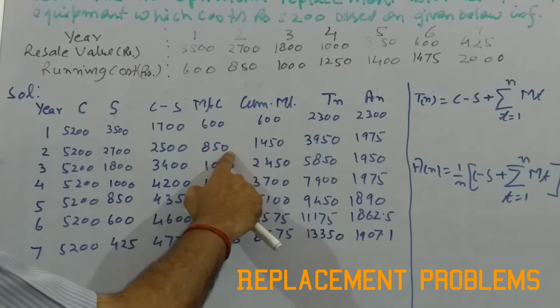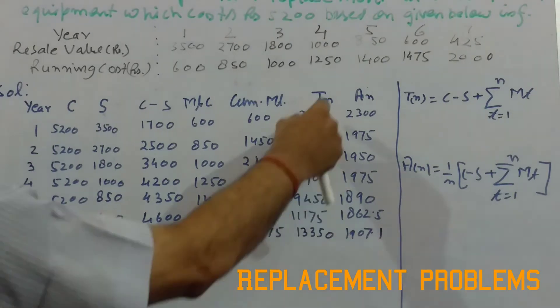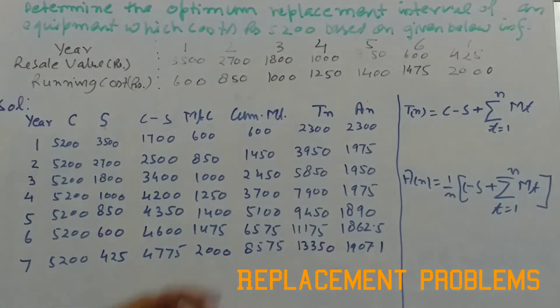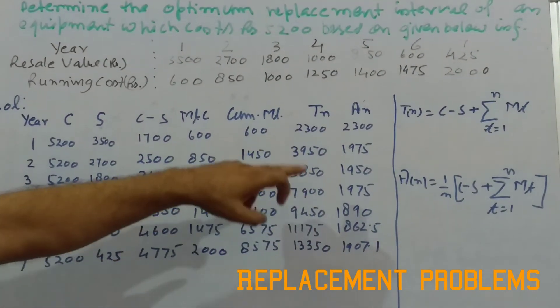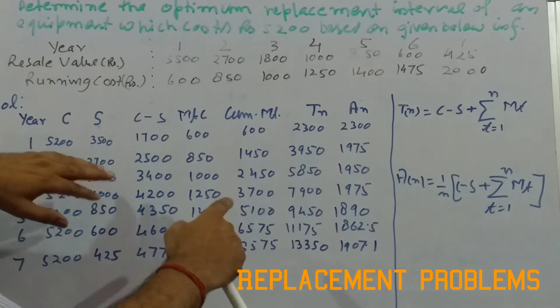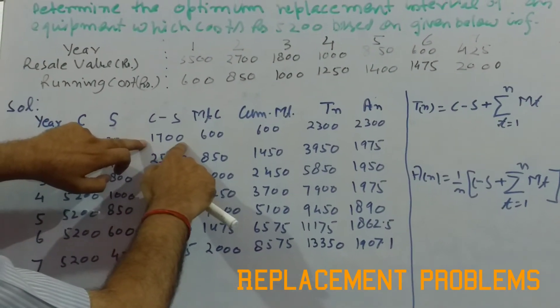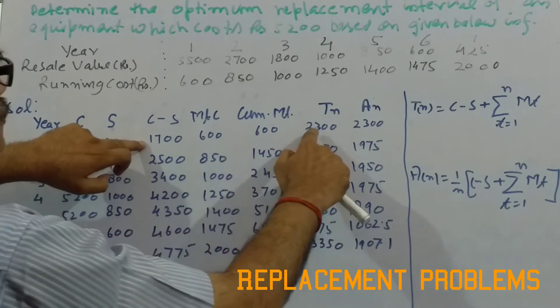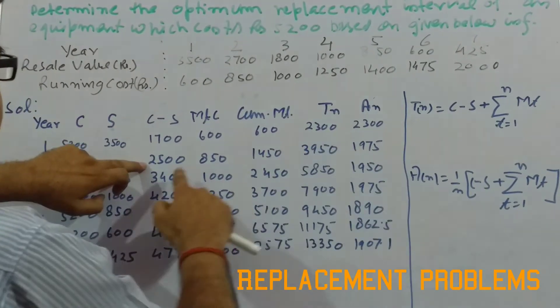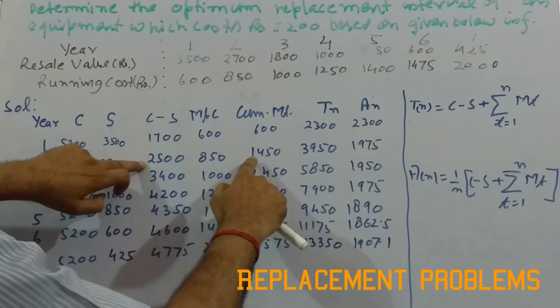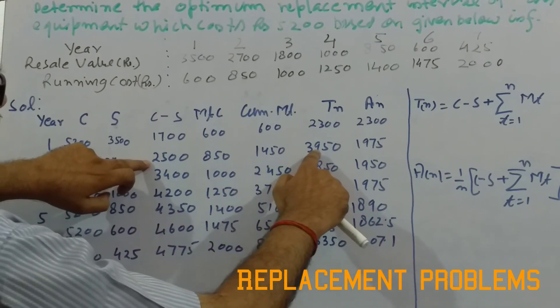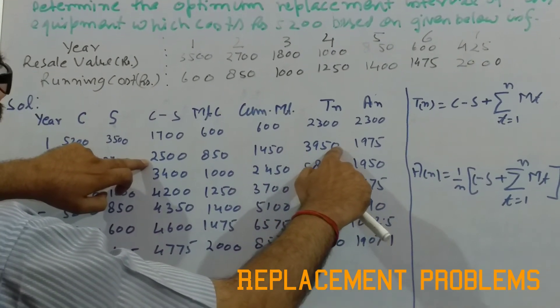The total cost here, that is represented by TN, so the total cost is C minus S, 1700, plus 600, that is 2300. For year two, 2500 plus 1450 comes out to be 3950, and so on.